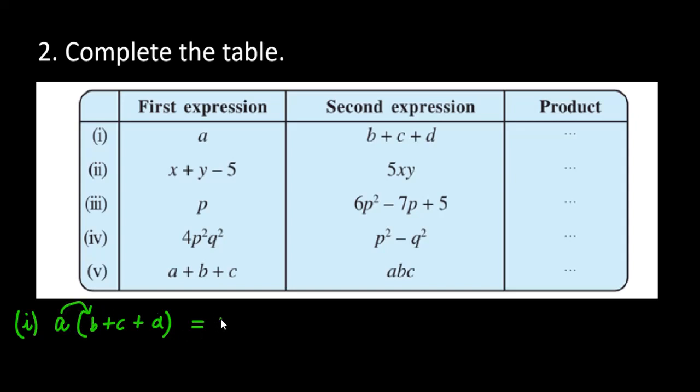You multiply A by B. The result will be AB. A by C, it will be plus AC. Then, A by D, it will be AD. So, the final product is AB plus AC plus AD.